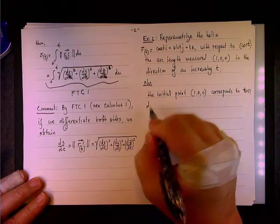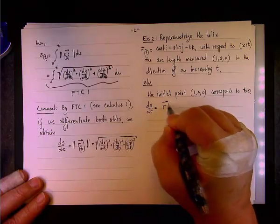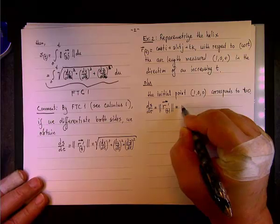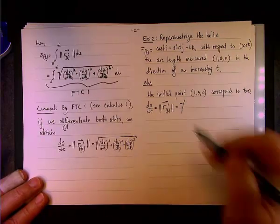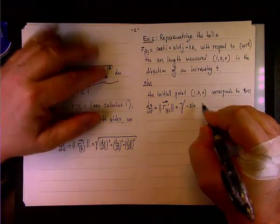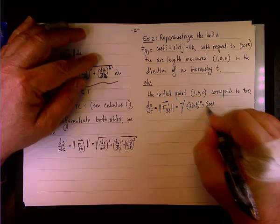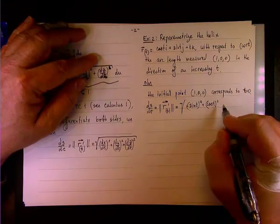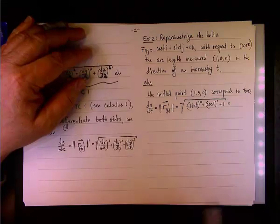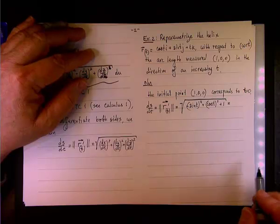Remember how we took the derivative? Let's do the same thing. ds/dt will be the magnitude of the derivative vector r prime. For this particular curve, it will be the square root of (-sin t)² + cos²t + 1².